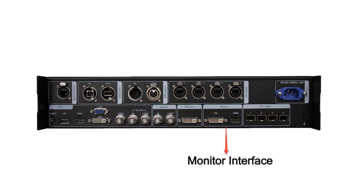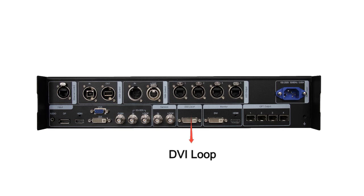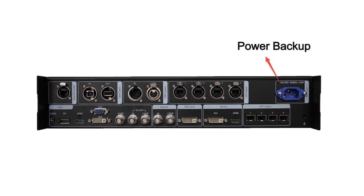And this is the monitor interface. We can connect the screen by DVI or HDMI so that we can monitor the current video signal. And this is the DVI loop — we can use it if we need to cascade to another Nova Pro HD. The fourth part is the power supply. We designed double power supplies for backup. If one power fails, the other will work automatically.